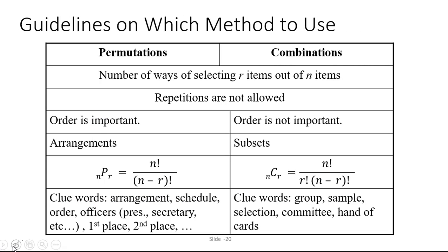Okay so now that we've talked about permutations and combinations let's review the similarities and the differences. So first the similarities. In both permutations and combinations we're looking for the number of ways of selecting r items out of n items and repetitions are not allowed in either of these calculations.